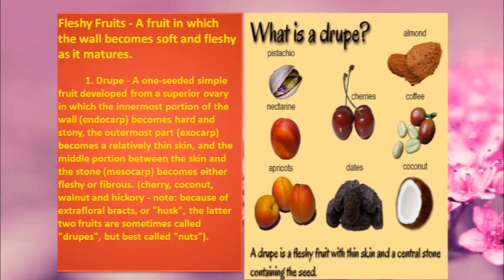In a drupe, the outermost part — the exocarp — becomes a relatively thin skin. The middle portion between the skin and the stone — the mesocarp — becomes either fleshy or fibrous, as seen in cherry and coconut. Because of extra floral bracts, some fruits like walnut and pistachio are sometimes called drupes, but are best called nuts. Examples of drupes include pistachio, almond, coconut, coffee, dates, and apricots. So, a drupe is a fleshy fruit with a thin outer skin and a central stone that contains the seed.